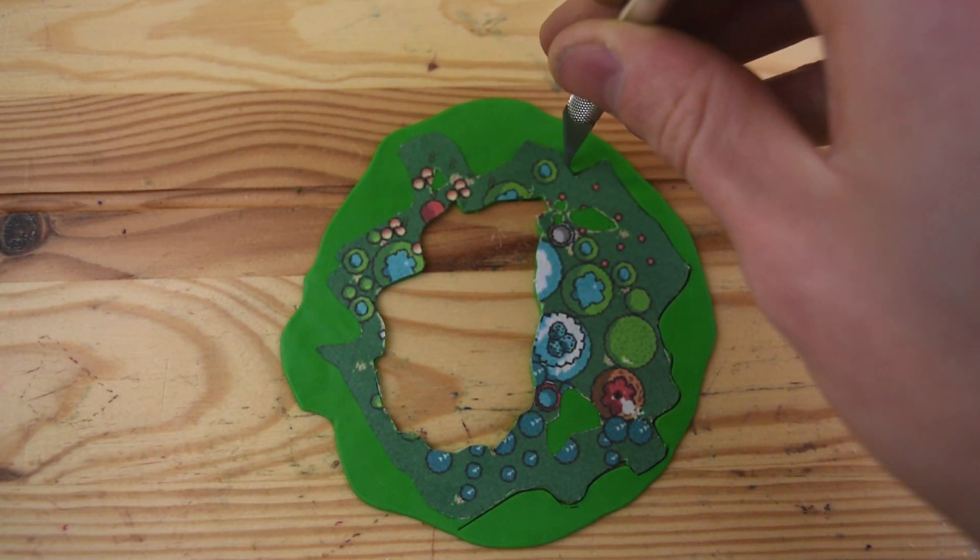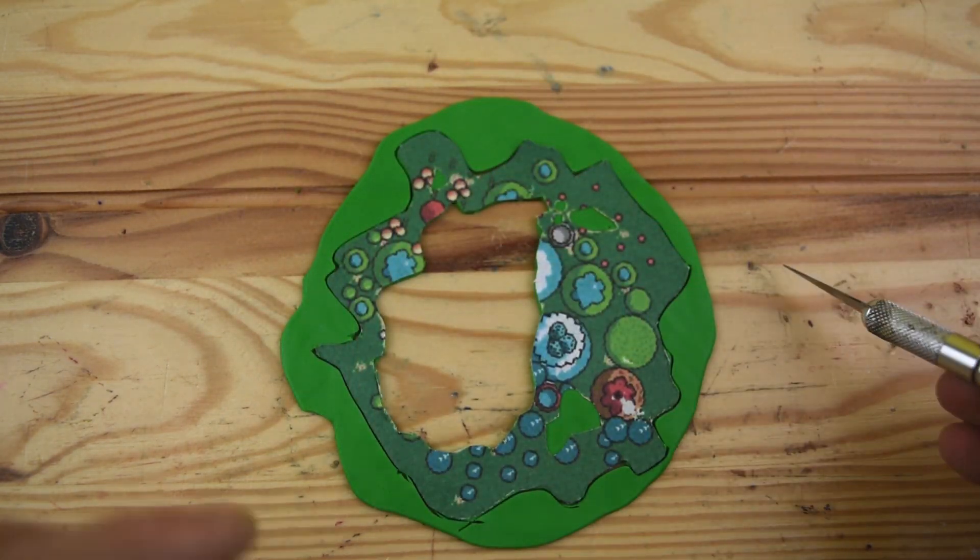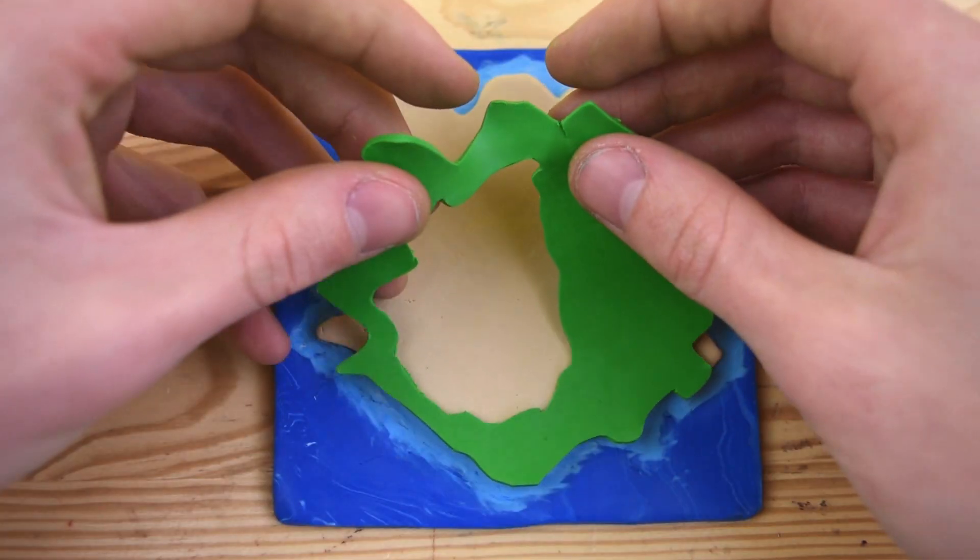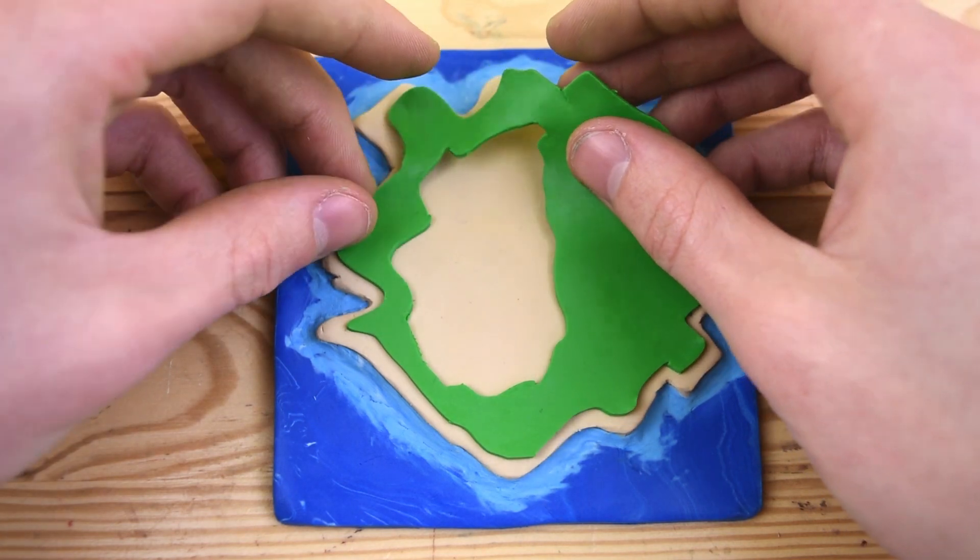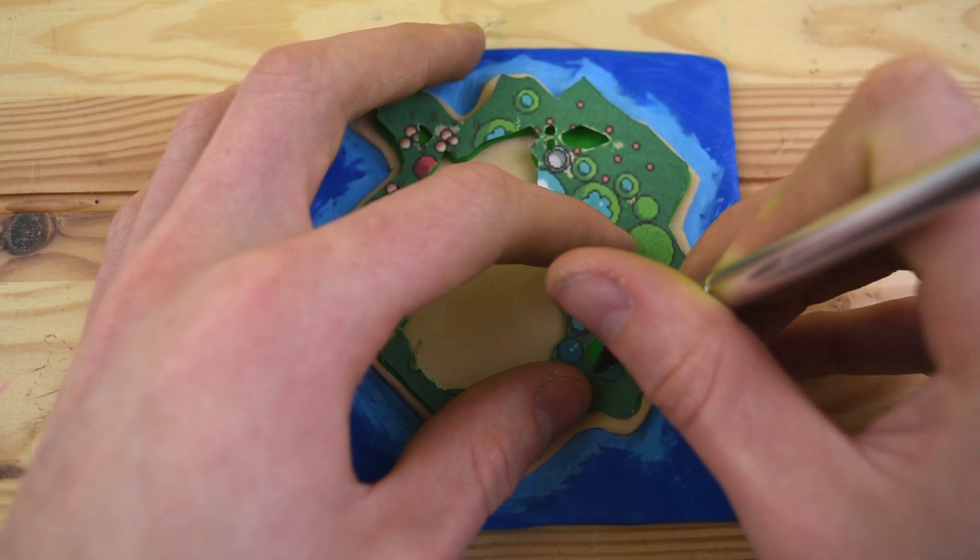And the parts that had the sand in them, we will fill in with some tan clay after we get the grass onto the island. Using the template again, we can figure out where those little sand spots were and remove those.